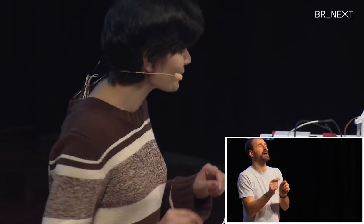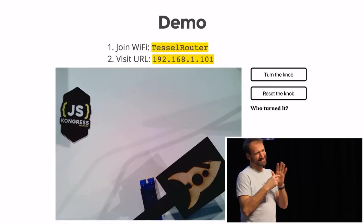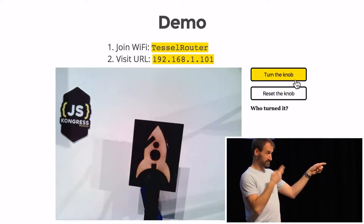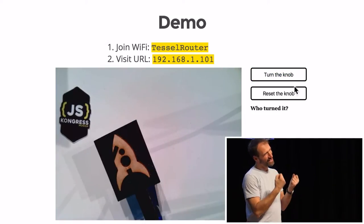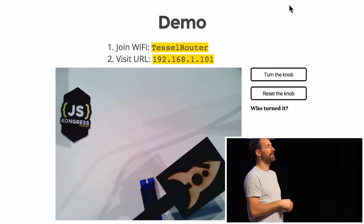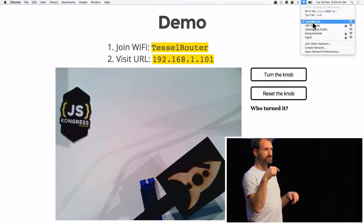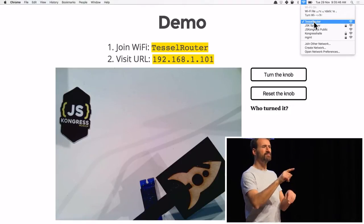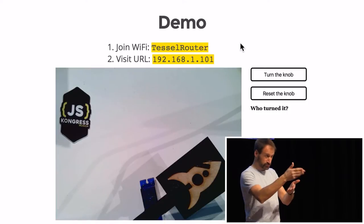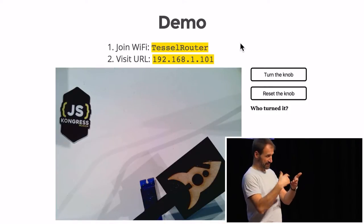The best way to understand this is through a demo. Here I have a little demo — I can turn the knob, and you can see this is live, not a static GIF. Some of you sitting in the front row can try it: connect to the Tesla router Wi-Fi SSID and go to the private IP address 192.168.1.101 to turn the knob yourself.